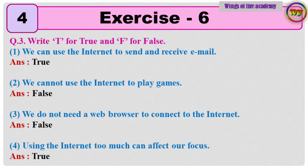Question 3: Write T for True and F for False. 1. We can use the internet to send and receive email. Answer: True. 2. We cannot use the internet to play games. Answer: False. 3. We do not need a web browser to connect to the internet. Answer: False.